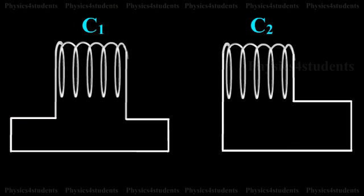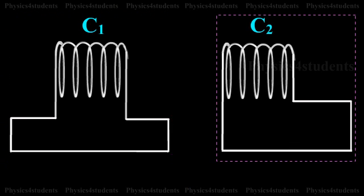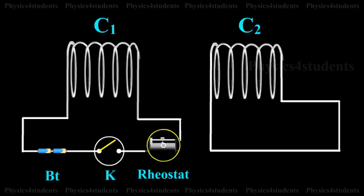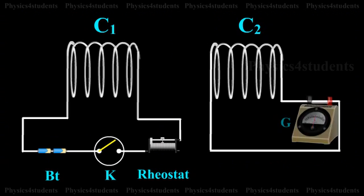two coils C1 and C2 placed close to each other. The coil C1 is connected to a battery BT through a key K and a rheostat. Coil C2 is connected to a sensitive galvanometer G and kept close to C1.